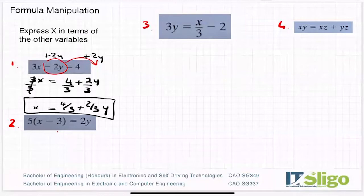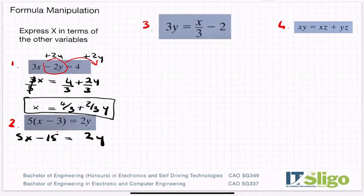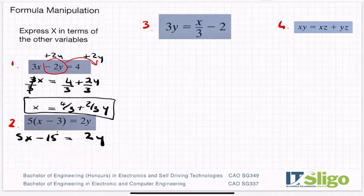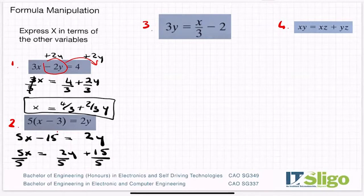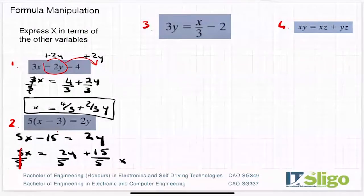Question two: express x in terms of the other variables. We have brackets here, so the first job in algebra is to get rid of the brackets — multiply that in: 5 by x is 5x, 5 by minus 3 is minus 15, equals 2y. So we want x equals, so minus 15 needs to move over to the other side as plus 15. Divide by 5 across the whole equation — they cancel — and you get x is equal to two-fifths y plus 3.